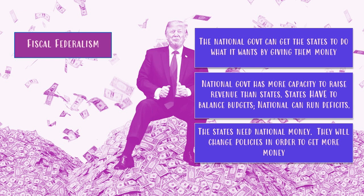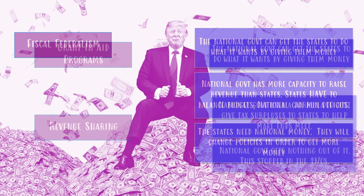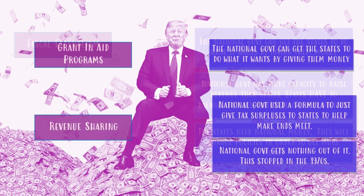So the states are desperate to get national money — they will do what the national government wants and change their policies in order to get it. This usually happens through what we call grant-in-aid programs, where the national government gives money to the states to help them do what the national government wants.